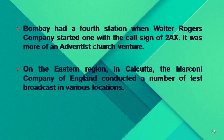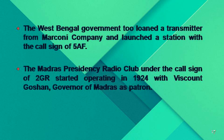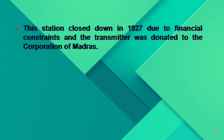In Calcutta, the Marconi Company of England conducted test broadcasts, and the Calcutta Radio Club loaned a transmitter to start their own station in November 1923 with call sign 2BZ. The West Bengal government too launched a station with call sign 5AF. The Madras Presidency Radio Club, under call sign 2GR, started in 1924 with Viscount Goshen, the governor of Madras, as patron, and closed in 1927 due to financial constraints, with its transmitter donated to the Corporation of Madras.